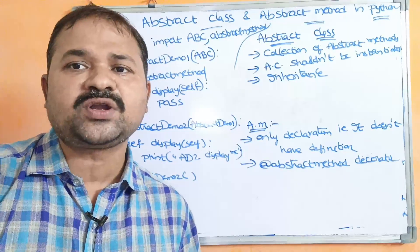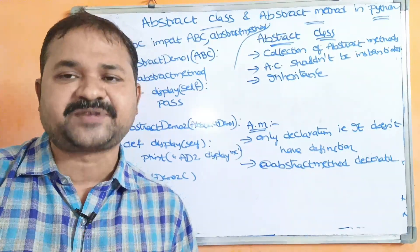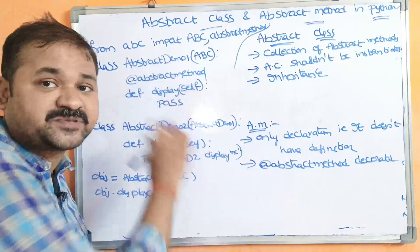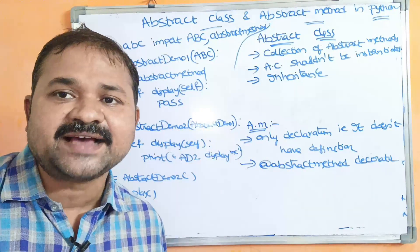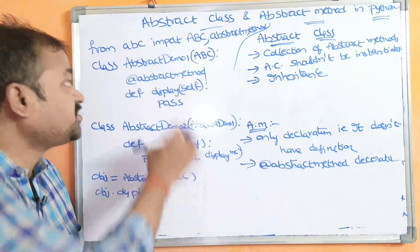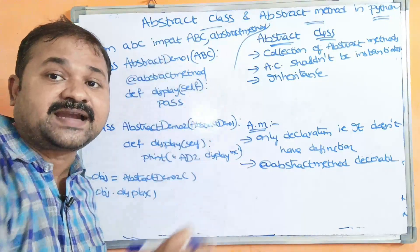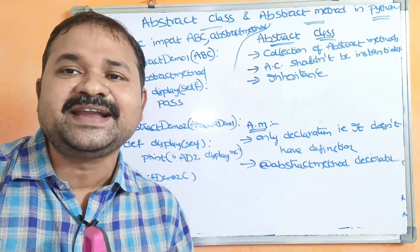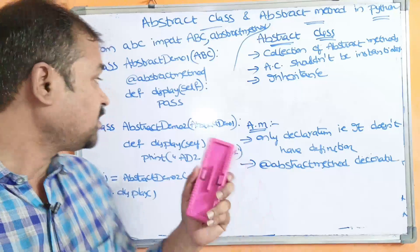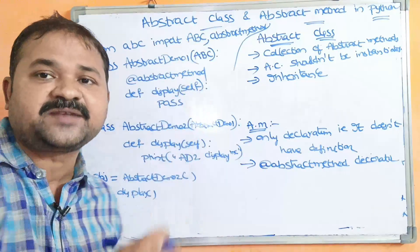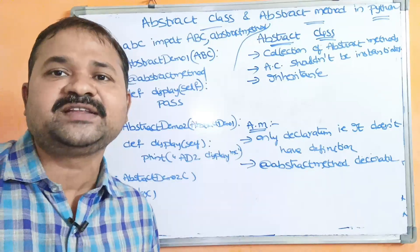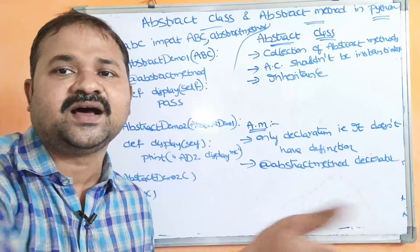So this is about what is abstract class and what is abstract method. The child classes which are implementing the abstract class have to provide the definition for the methods present in the abstract class. Suppose the abstract class contains two abstract methods — then for those two methods, the child classes have to provide the definition.